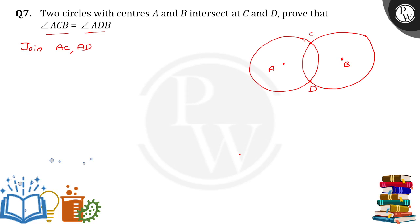We need to join AC and AD. I'm joining A to C and A to D. Then, join B to C and B to D. Finally, join AB. If we observe carefully...